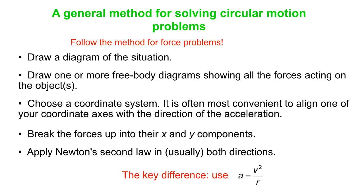Now, all of that is the same as what we've done before. The key difference now is when you write out sum of all the forces equals ma, in the direction which is toward the center of the circle, we're going to use, instead of a, we're going to use v squared over r. So, instead of sum of all the forces equals ma, sum of all the forces in that direction is mv squared over r.